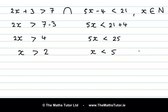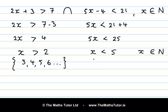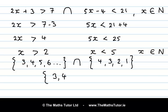Remember that x is an element of ℕ. We can list the solution set of each inequality separately. x is greater than 2, so the elements are 3, 4, 5, 6 and so on. For the second one, x is less than 5, so the elements are 4, 3, 2, 1. Now we want the intersection — what elements are common to both sets? 3 is common to both, 4 is common to both. 5 and 6 are not in the second set, and 2 and 1 are not in the first set. So the solution set is {3, 4}.